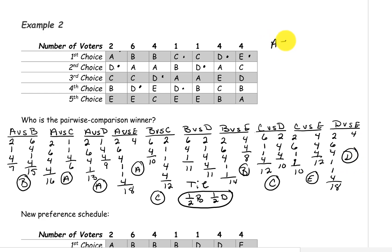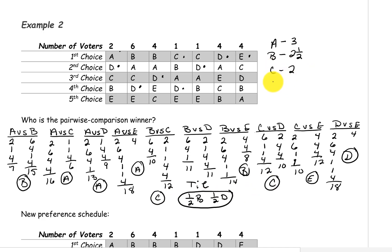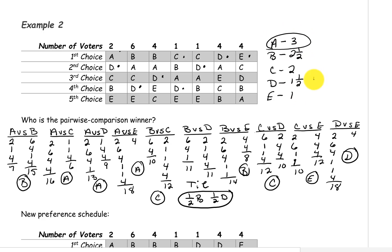Now we tally up their points. Candidate A wins three of their pairings. Candidate B wins two and this half, so B has two and a half. Candidate C wins two of its pairings. Candidate D wins one and this half, so one and a half. And finally, candidate E wins just this one pairing. The candidate that won the most pairings was candidate A, so A wins.